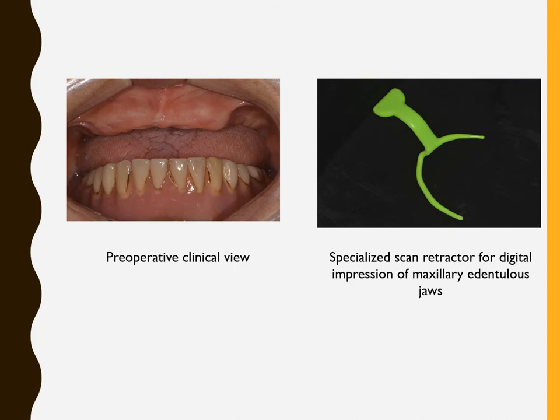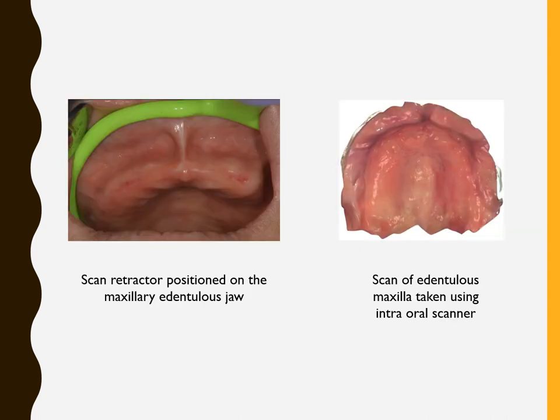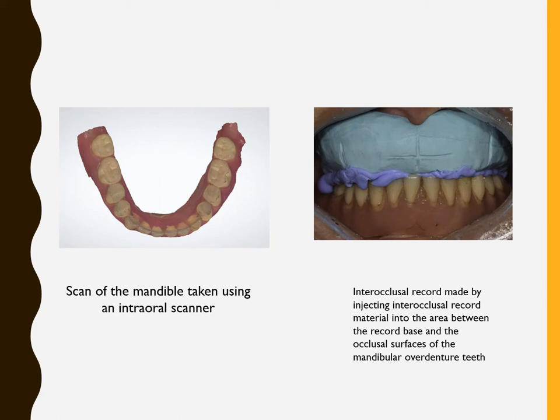The process of digital complete denture fabrication involves scanning the maxillary arch and the lower arch. As you can see in the slide, this is a complete denture case. A scan retractor is used to retract the mucosa, and the intraoral scanner is placed. Each area is scanned and the stitched images are combined in the software to form the complete image of the maxilla. The mandibular denture is also scanned.